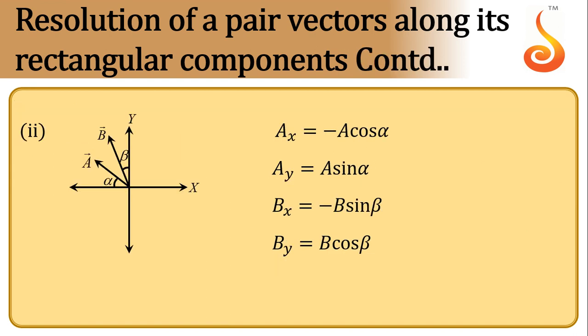Likewise, here we have a vector A subtending an angle alpha, but on the negative x side, which means that its x component turns out to be negative A cos alpha and y component is A sin alpha. The y component is along positive y direction and x component is along negative x-axis.